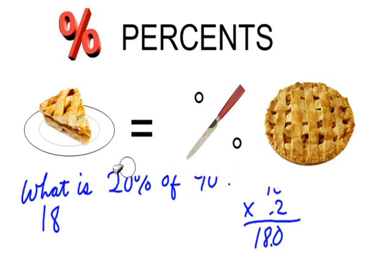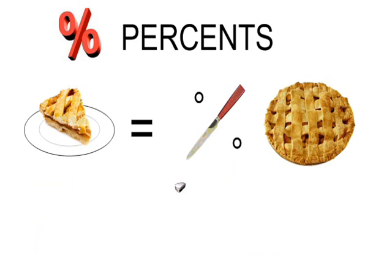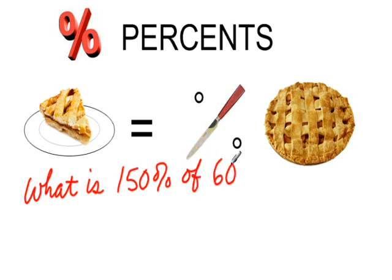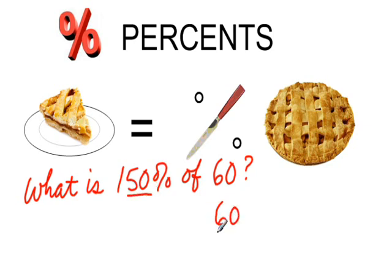Now, the knife in this case is a magic knife, and in fact it can cut a slice that is actually bigger than the original pie. What is 150% of 60? Well, 100% of 60 will be 60, and another 50% of 60 is 30. And when you add those together you get 90. So 90 is 150% of 60.